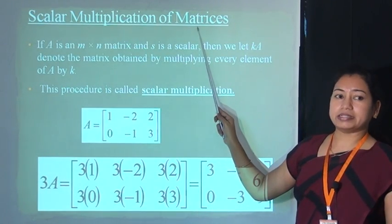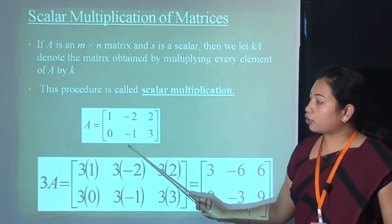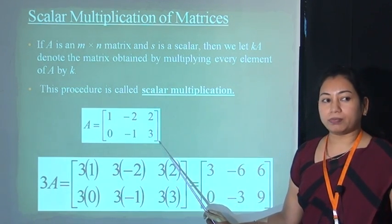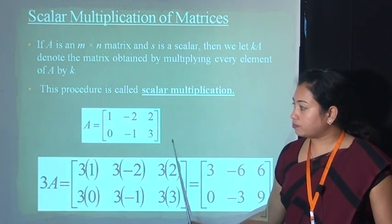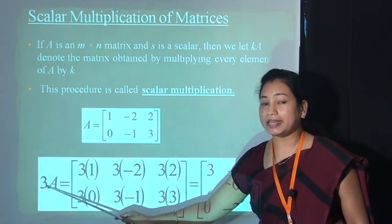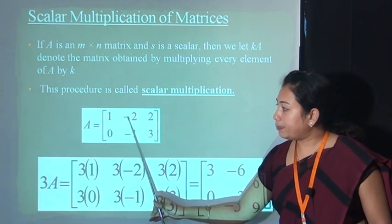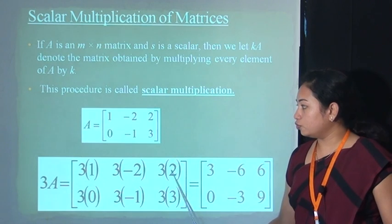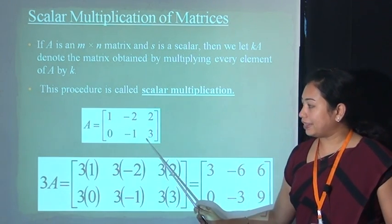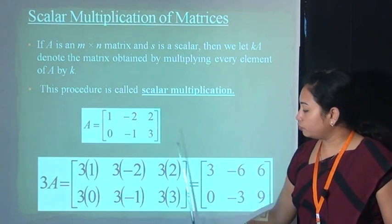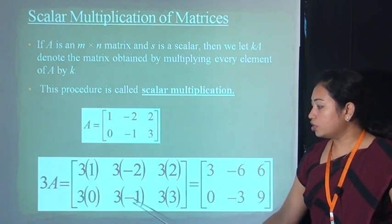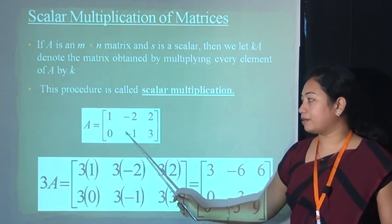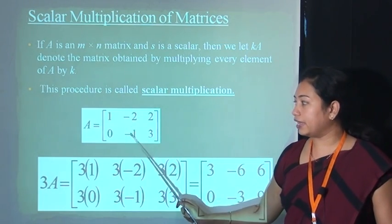Now, scalar multiplication of matrices. If we multiply a matrix by any scalar, the answer is obtained by multiplying each and every element by that scalar. For example, this matrix has order 2×3 — two rows and three columns. If I multiply this matrix by 3, where 3 is the scalar k, then: 3×1=3, 3×(−2)=−6, 3×2=6, 3×0=0, 3×(−1)=−3, and 3×3=9. This is the scalar multiple of matrix A with k=3.